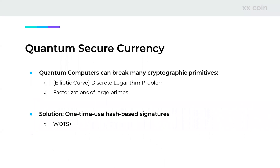Why a quantum-secure currency? Quantum computers are closing in, and the algorithms that run on them can break many cryptographic primitives. Shor's algorithm and Grover's algorithm are serious threats to present-day cryptography — Shor's can break the discrete logarithm problem and the factorization of large primes. To solve this, we use one-time hash-based signatures, specifically the WOTS+ scheme introduced in 2013, which has very solid security proofs and is a well-established, proven scheme.